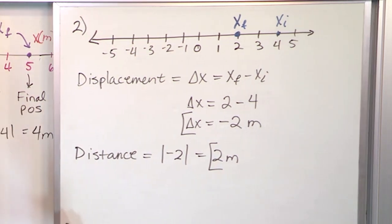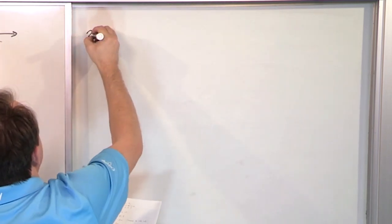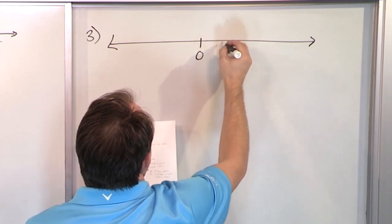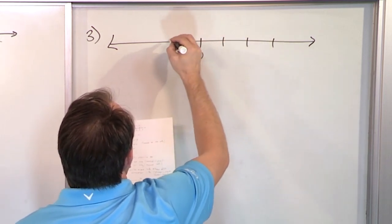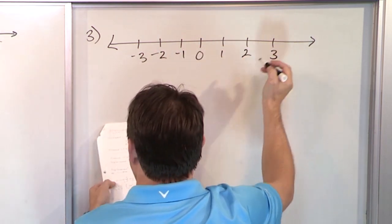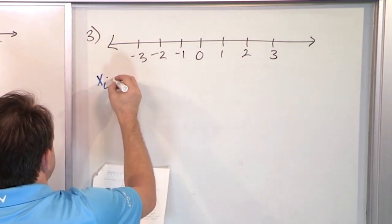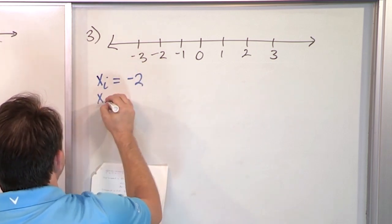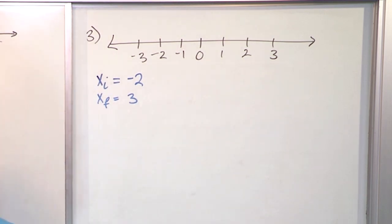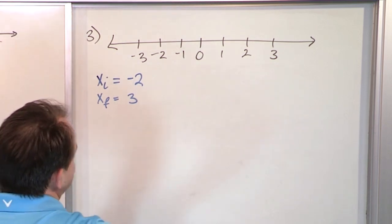Let's do just a couple more quick examples to solidify things. Problem number three: let's say we have a number line with negative three, negative two, negative one, zero, one, two, and three. You're given that the initial position is x equal to negative two, and the final value of position is x equal to three. Find the displacement and the distance. Let's do it without plotting first.